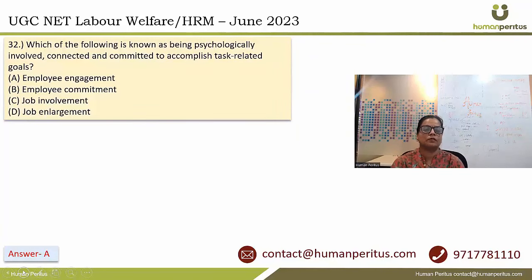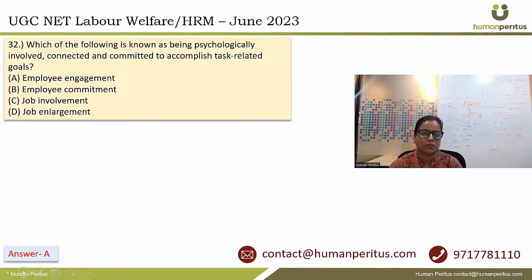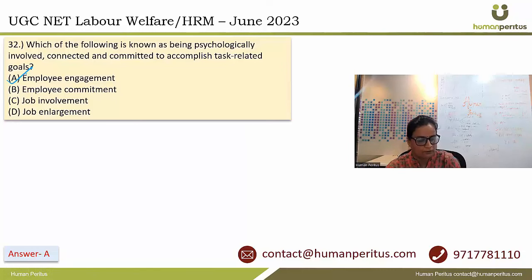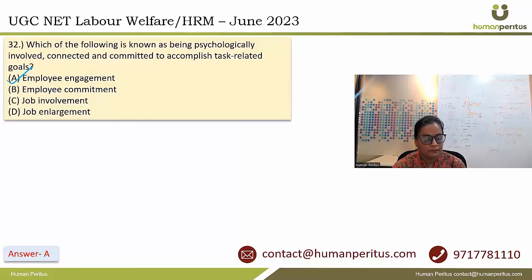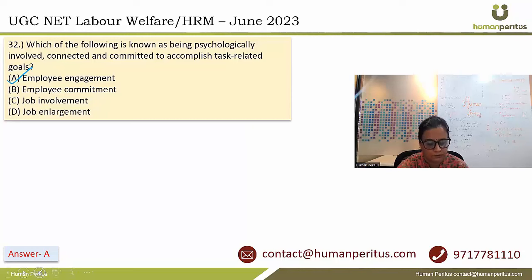Which of the following is known as being psychologically involved, connected, and committed to accomplishing task-related goals? This term refers to employee engagement — the emotional and psychological connection employees have with their work and organization, feeling involved, committed, and connected to the accomplishment of task-related goals. Answer is option A.